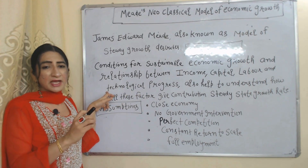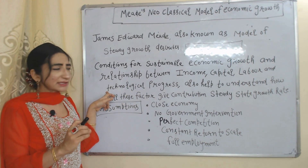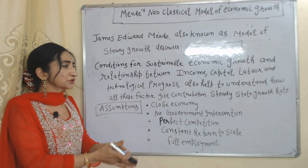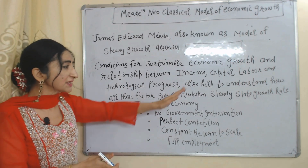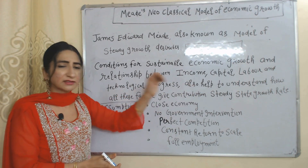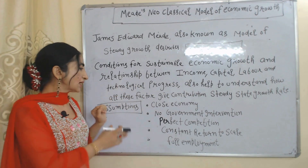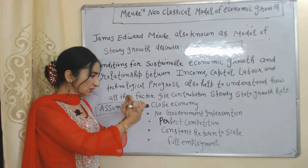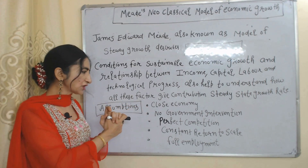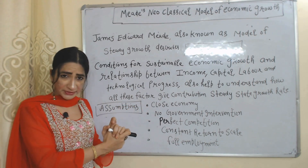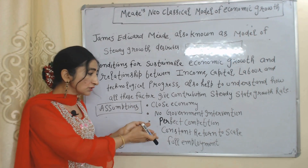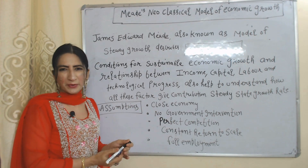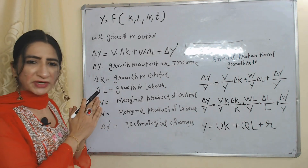The model also describes how all these factors contribute to achieving a steady state growth rate. The assumptions of this model are: closed economy, no government intervention, perfect competition, constant returns to scale, and full employment.